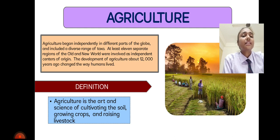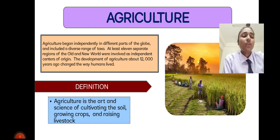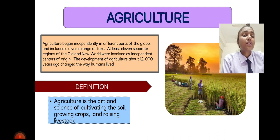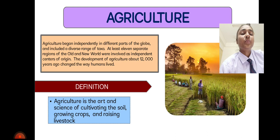The development of agriculture about 12,000 years ago changed the way humans lived. Agriculture is the art and science of cultivating the soil, growing crops, and raising livestock. Agriculture helps us grow and feed — it provides us food and many other necessary things. So agriculture is very important, and our topic begins with it.